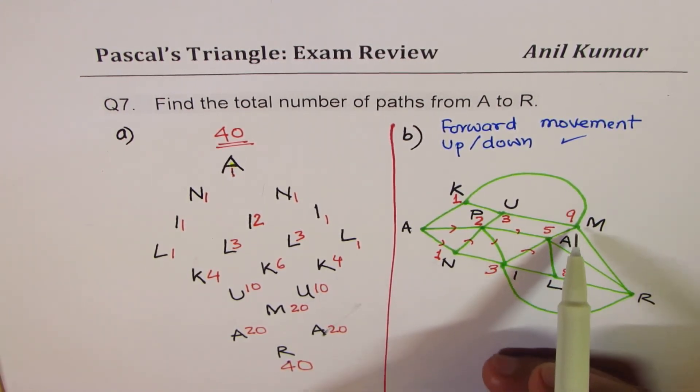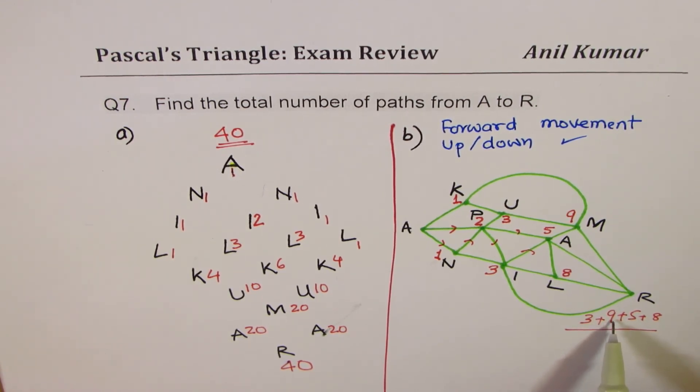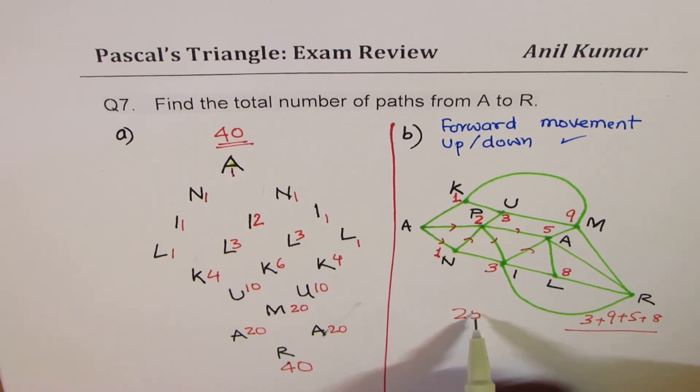We have to reach R. So you can reach R from M, from A, from L, and also from I. So we have to add 9 plus 5 plus 8, and there's 3 also. So these are the total number of ways to reach R. How many are they? 9 plus 3 is 12, 17 and 8, 25. So we have 25 ways of reaching from A to R in this particular case.